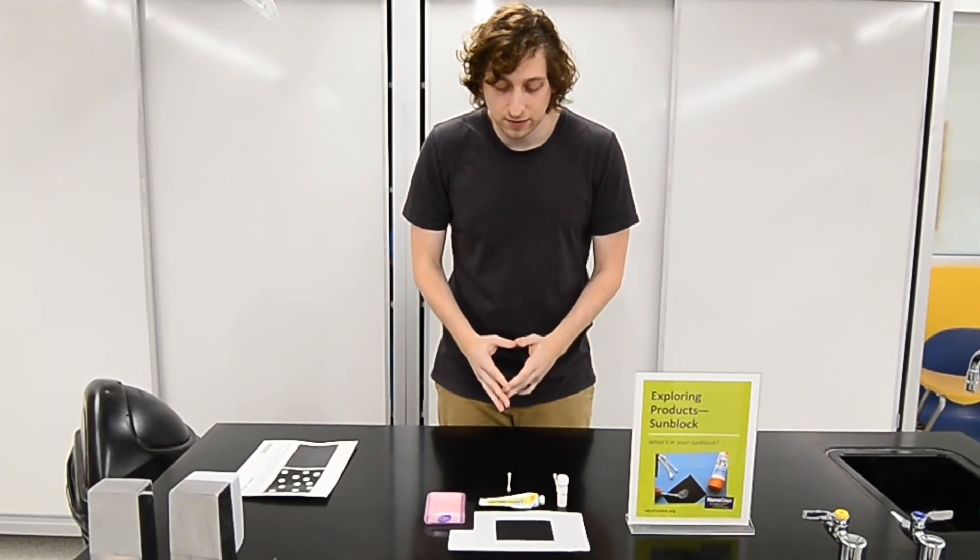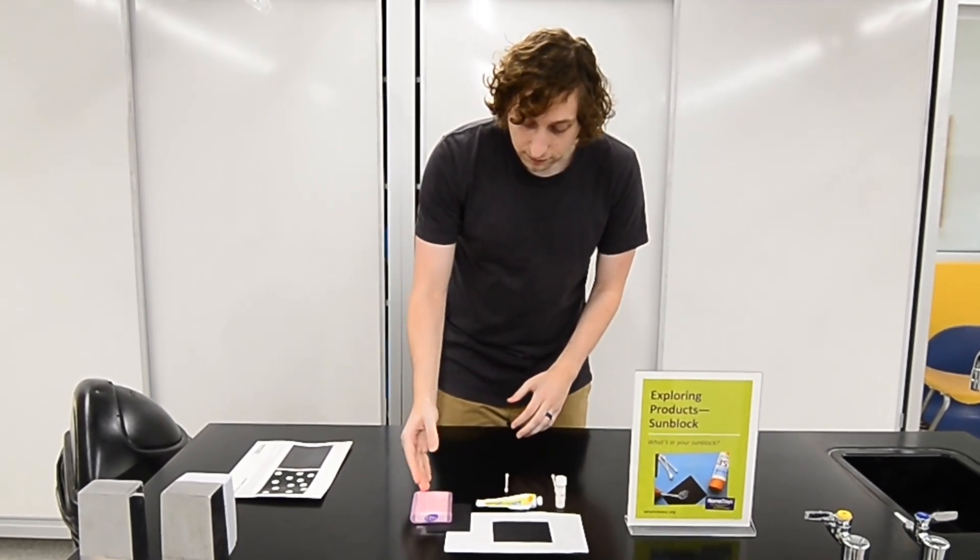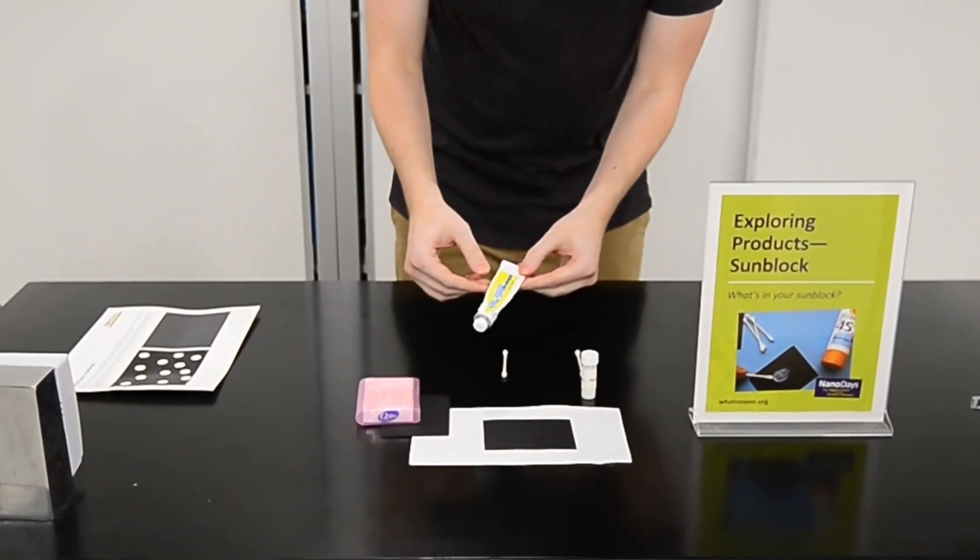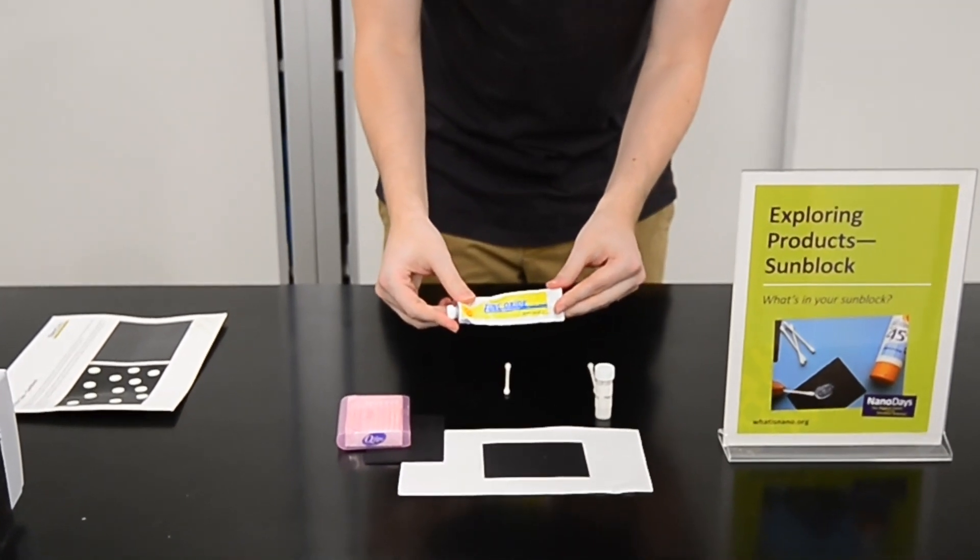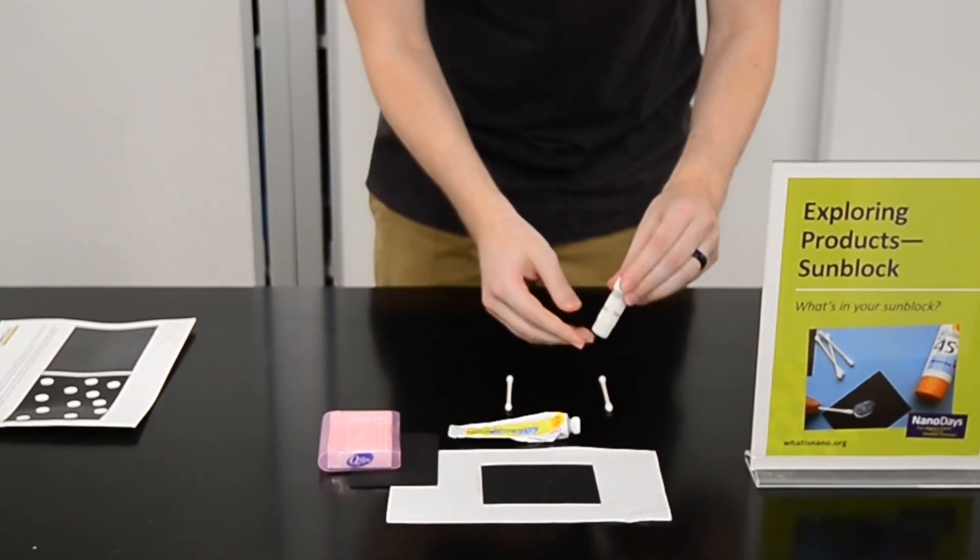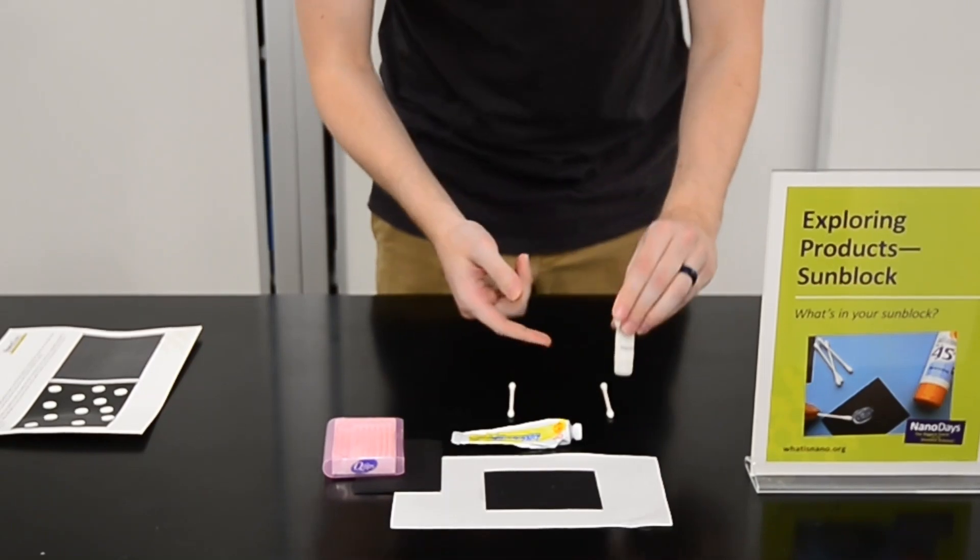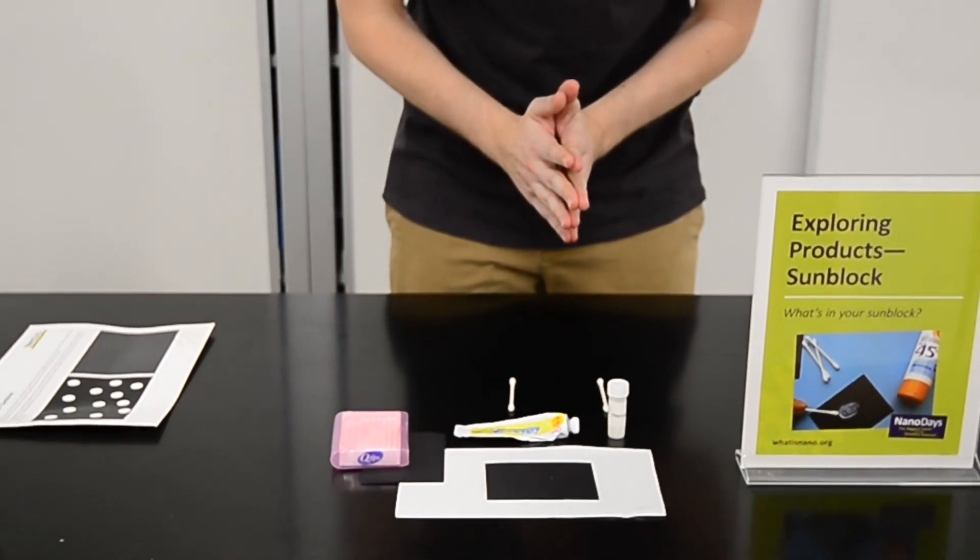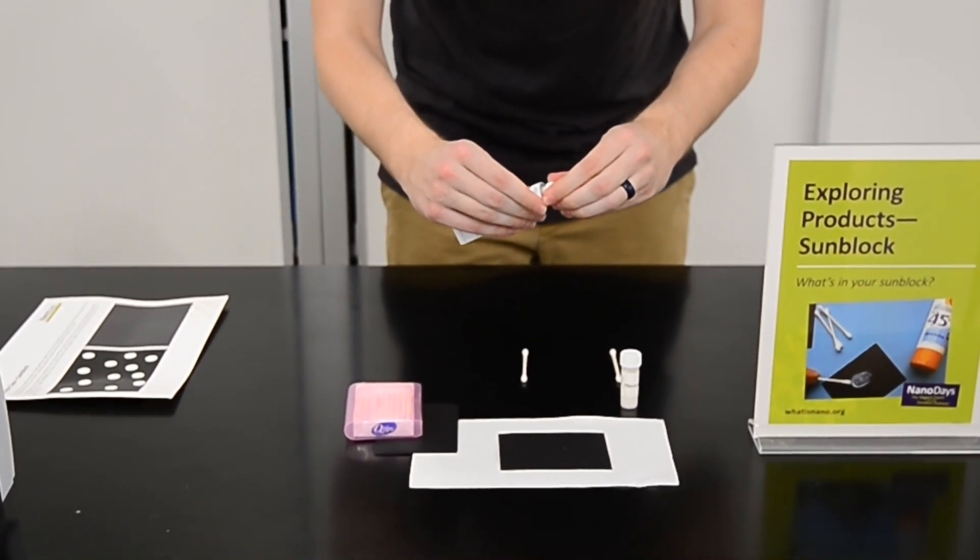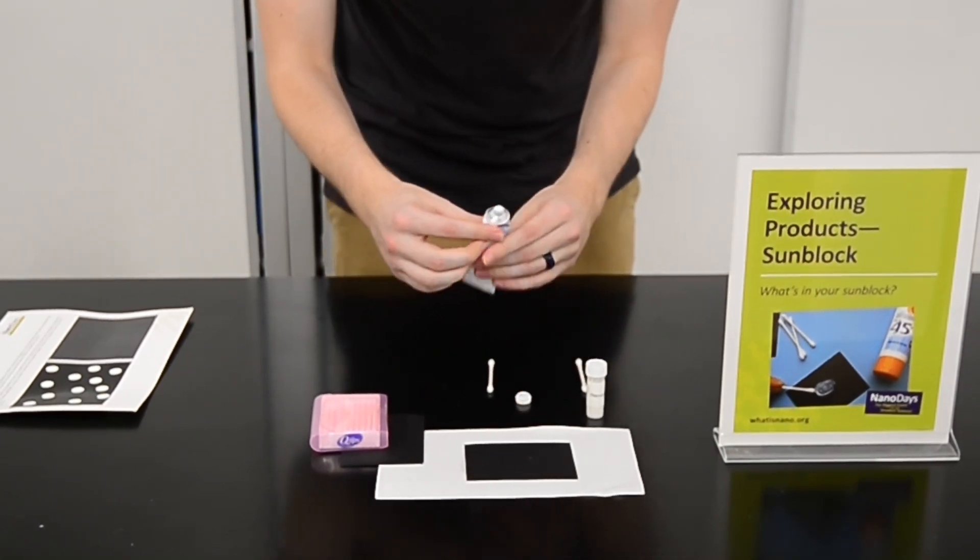All you'll need to do this experiment is some dark construction paper, some q-tips, and then finally you want some regular sunblock—it might say zinc oxide, it might just say white film sunblock—and also nanoparticle sunblock, which might also be known as clear sunblock or clear coating sunblock. And so what we're going to do, this is a very simple experiment, is we're going to just put a little bit of ointment on this q-tip and try and apply it to the dark construction paper.